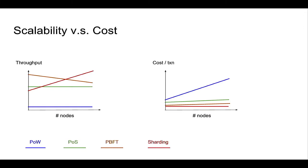When we talk about all of these ways to scale blockchains, we also mentioned that all of them can lower the cost. Here I want to summarize the relationship between scalability and cost, and compare them to increasing the number of nodes. Scalability is mostly defined by throughput — the number of transactions per second — while cost is defined by the amount you have to spend to perform a transaction.